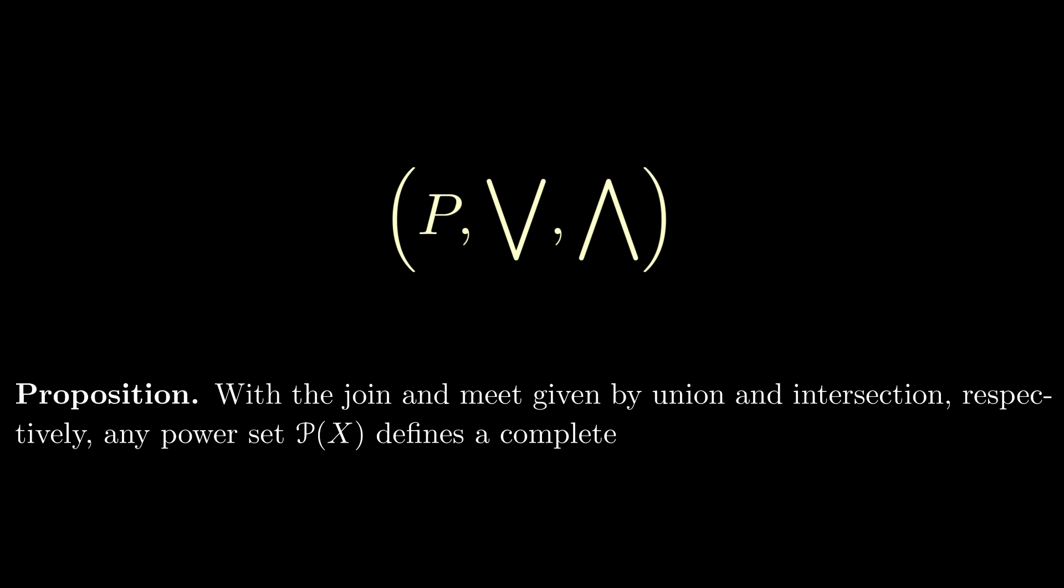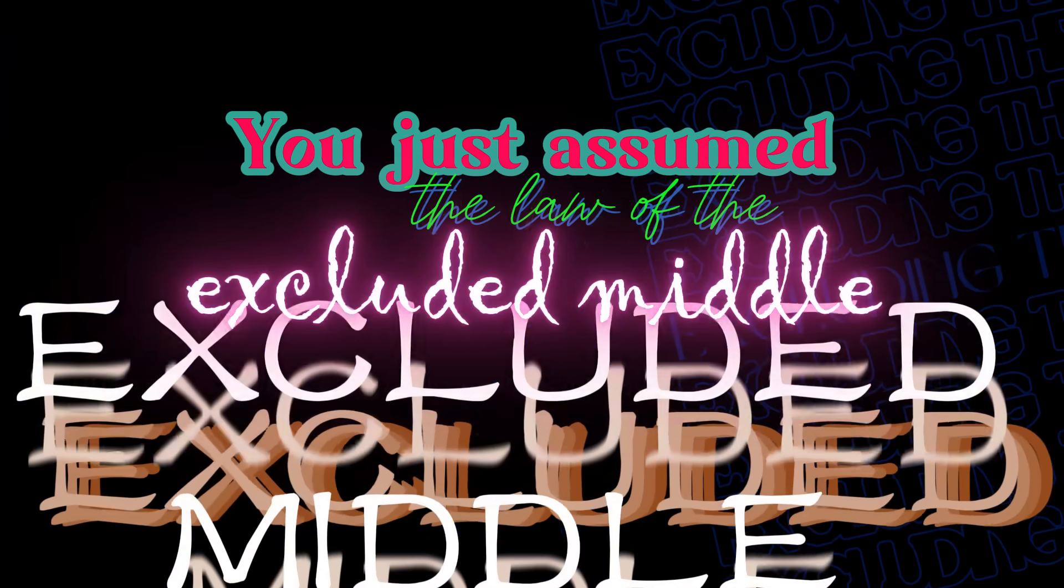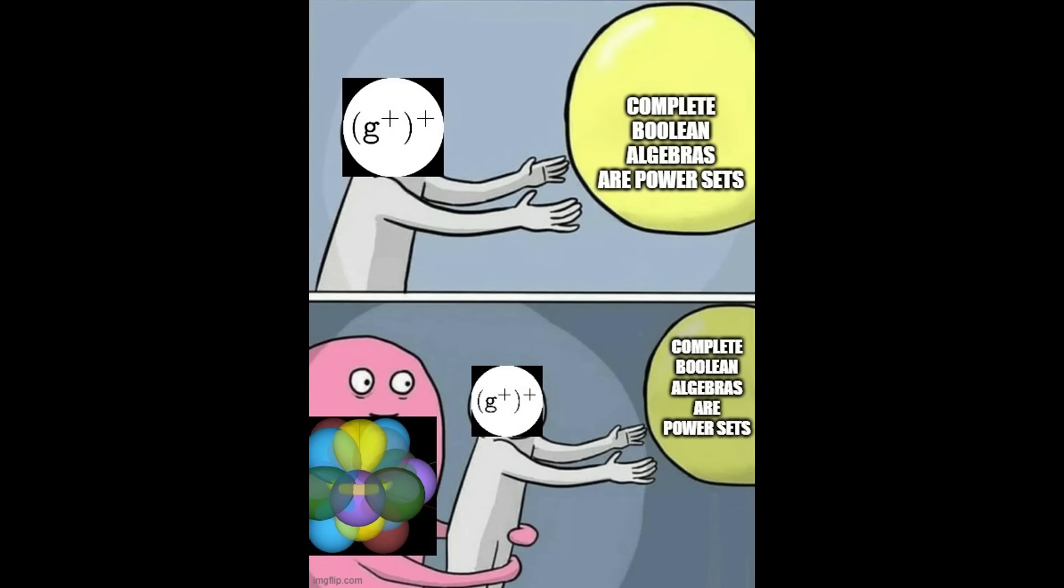Working through it carefully, you'll realize that the join and the meet operations will define... If you were about to say a complete Boolean algebra, then you just assumed the law of the excluded middle. Even if we do exclude the middle, the structure of a complete Boolean algebra is still not enough to completely characterize powersets.